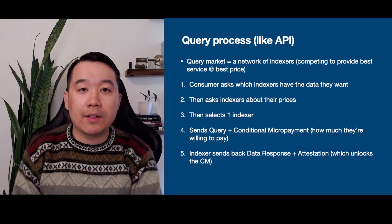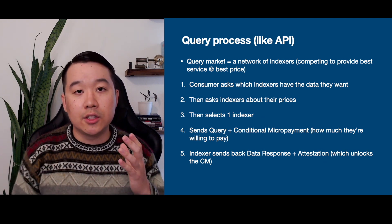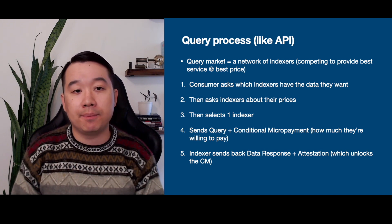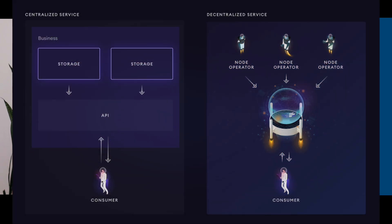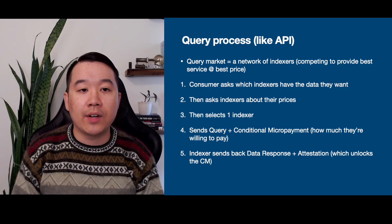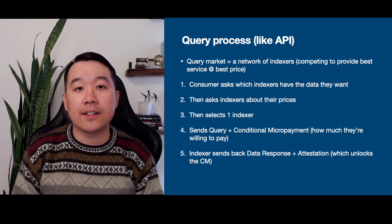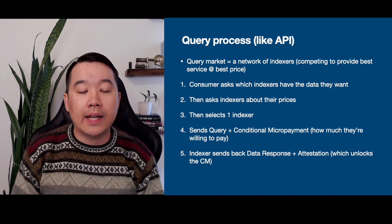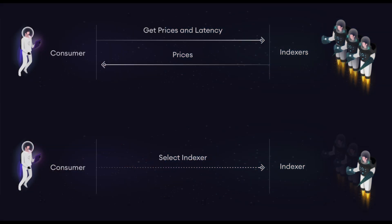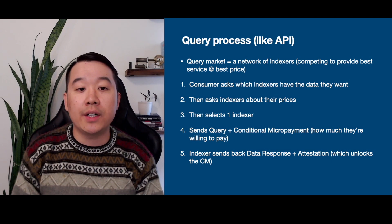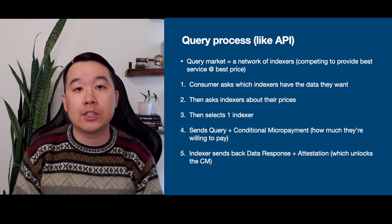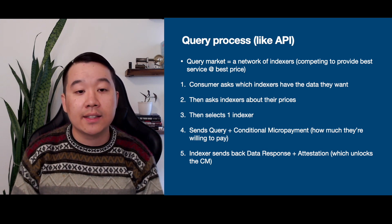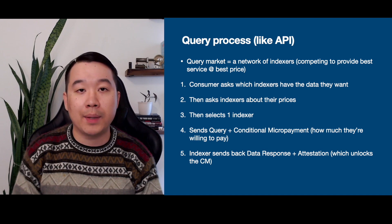A bit more about the query process: this is a service to query blockchain data efficiently, and you can think of it like an API. There's a query market with a network of indexers competing to provide the best service at the best price. Step one: consumers ask which indexers have the data they want. Step two: they ask those indexers about their prices. Step three: they select one indexer. Step four: they send a query and a conditional micropayment indicating how much they're willing to pay. Step five: the indexer sends back the data response and an attestation, which unlocks the conditional micropayment and gets them paid.